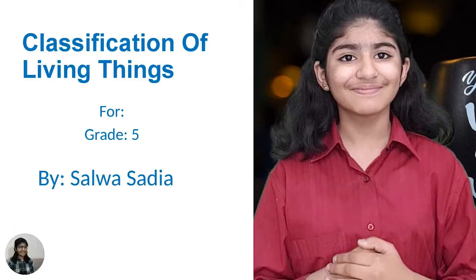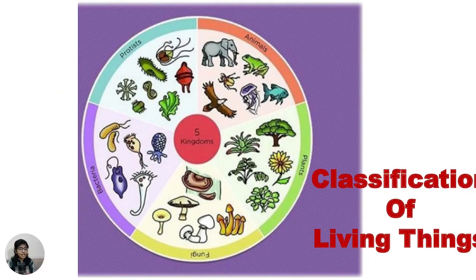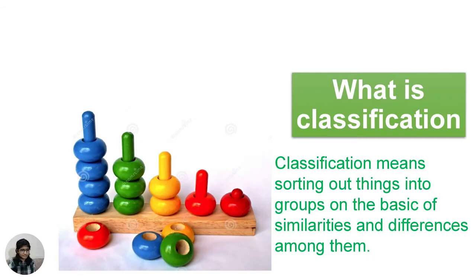Hi everybody, this is Ala Saadia. As you know, we have started a new series about ecosystems, and today the topic is the classification of living things. Our objective is that the person watching will be able to define classification, differentiate between various types of living things according to their characteristics, recognize and differentiate between various kingdoms of living organisms, and tackle textbook exercises. Classification means sorting things into groups based on similarities and differences among them.